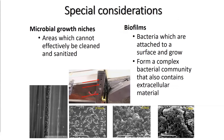Typically we see Listeria monocytogenes biofilms in drains — the floor drains in your packing shed — and in coolers. Any place where you would have condensate building up is of concern. They can also form biofilms in conveyor systems, such as foam rollers or other materials that hold moisture. Those are the areas we're most concerned about in terms of Listeria monocytogenes buildup.